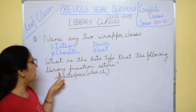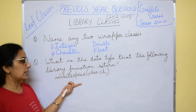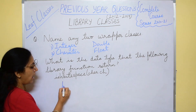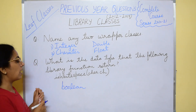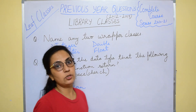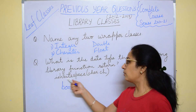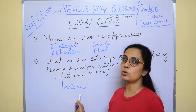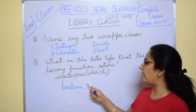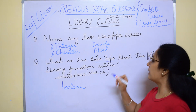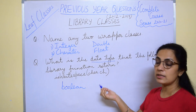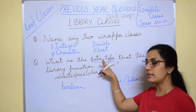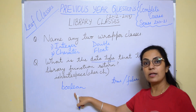What is the data type that the following library function returns? — isWhiteSpace. As I told you in the last video, if any function has 'is' in it, its return type will always be boolean. 'Is' means it is in a question form, so the answer will be either true or false. The return type of isWhiteSpace(char ch) is boolean — it checks if the given character is blank; it returns true otherwise false. Note: the question asks for data type, so we write boolean, not just true or false.